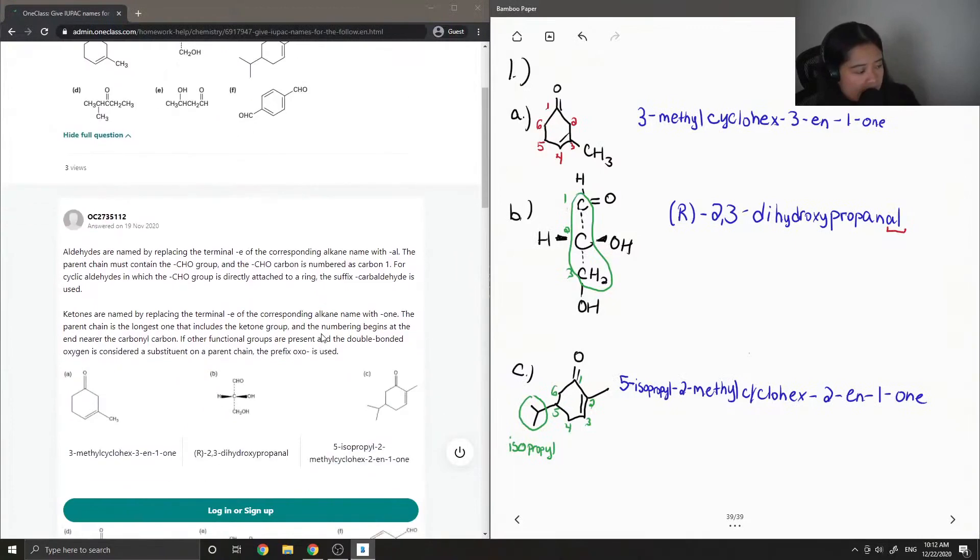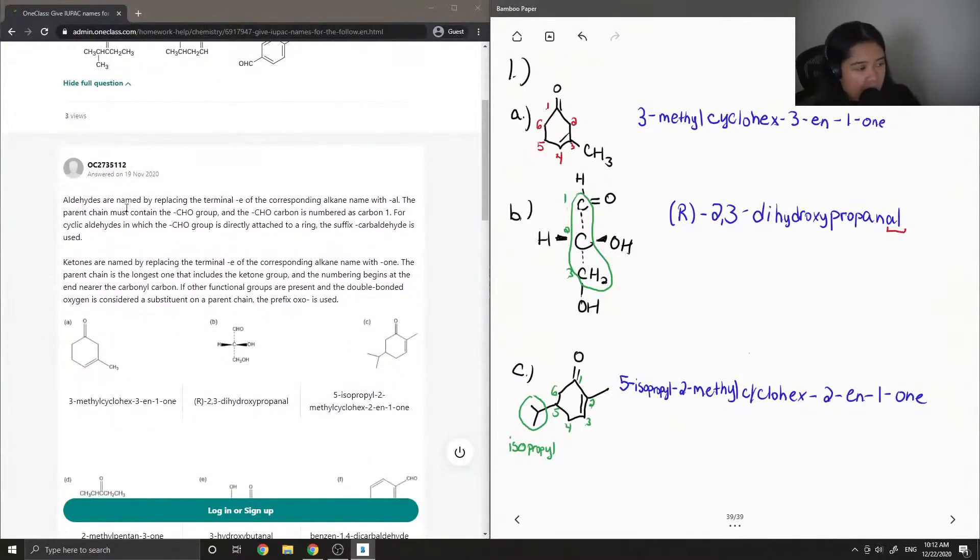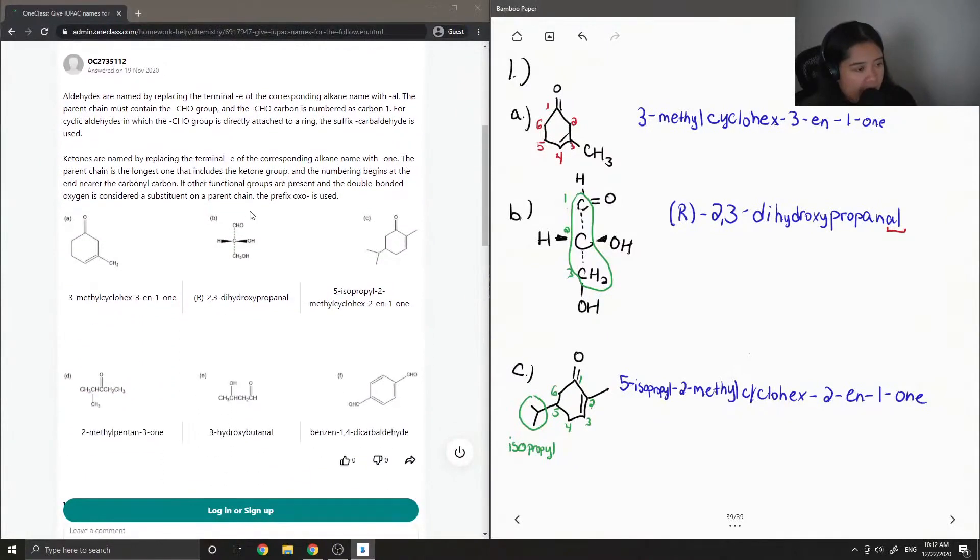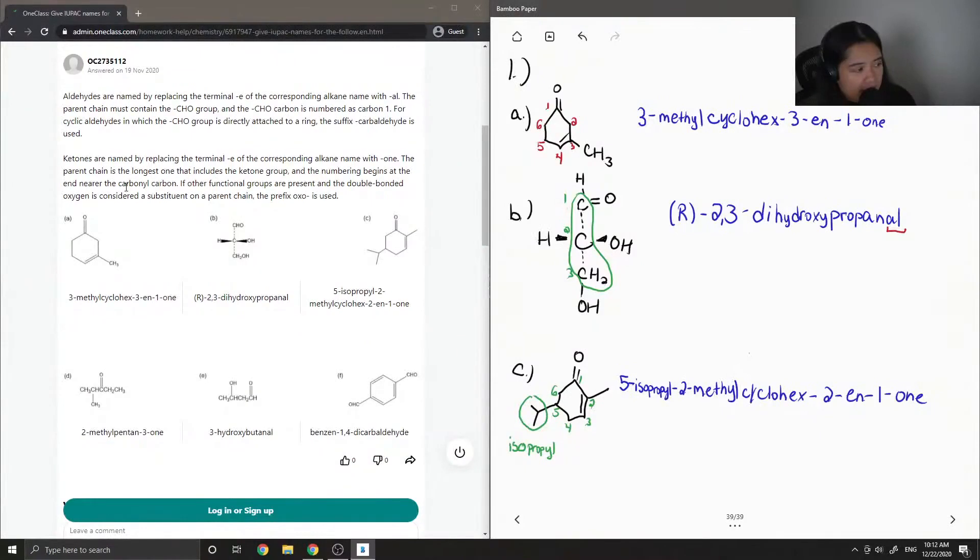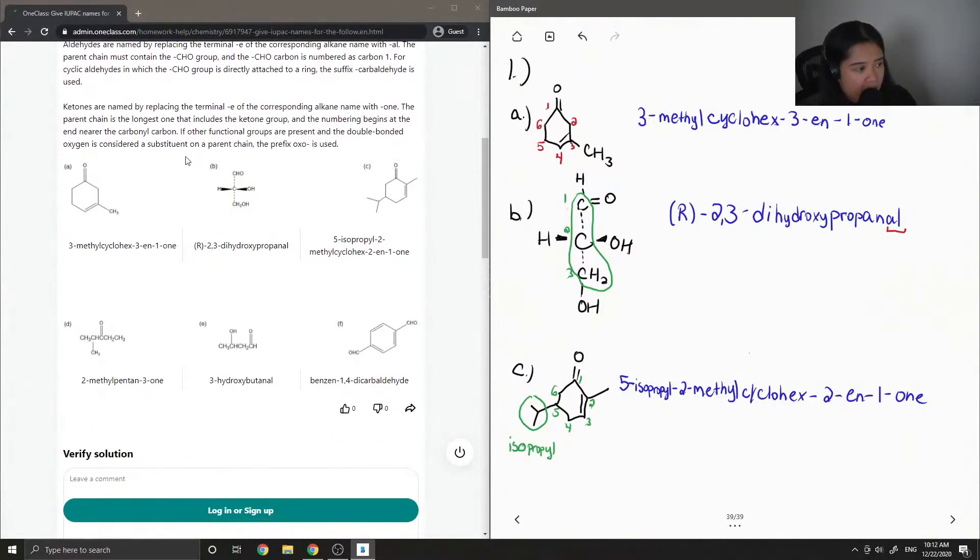Now let's see what the junior tutor said. Aldehydes are named by replacing the terminal E of the corresponding alkane name with al. The parent chain must contain the CHO group and the CHO carbon is numbered as carbon-1. For cyclic aldehydes, in which the carboxyl group is directly attached to a ring, the suffix carbaldehyde is used. Ketones are named by replacing the terminal E of the corresponding alkane name with on.